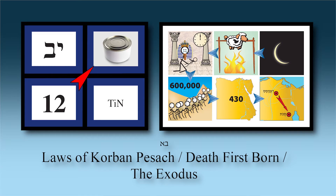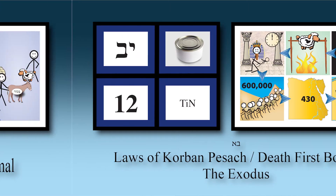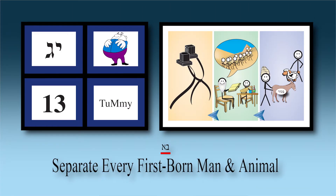That's chapter twelve — tin: Korban Pesach, Makkah Bechorot, and then Klal Yisrael leaving Egypt. We're now ready for chapter thirteen, still in Parashat Bo.